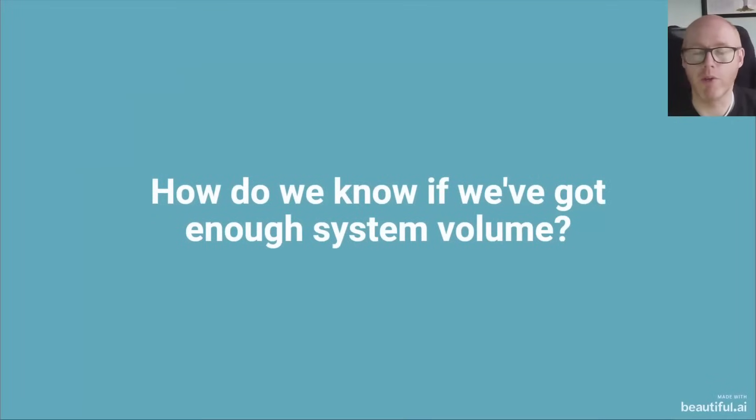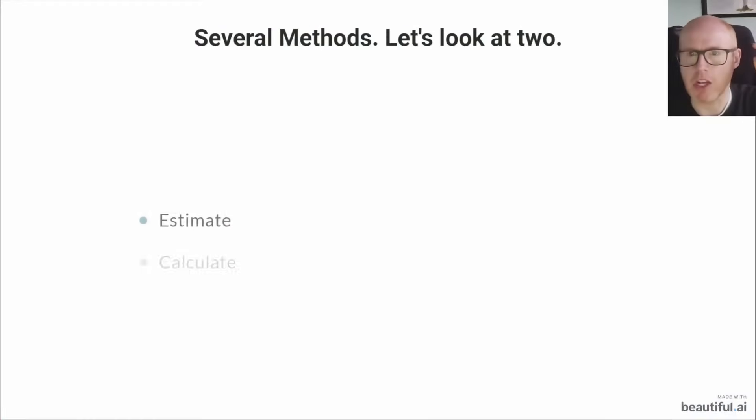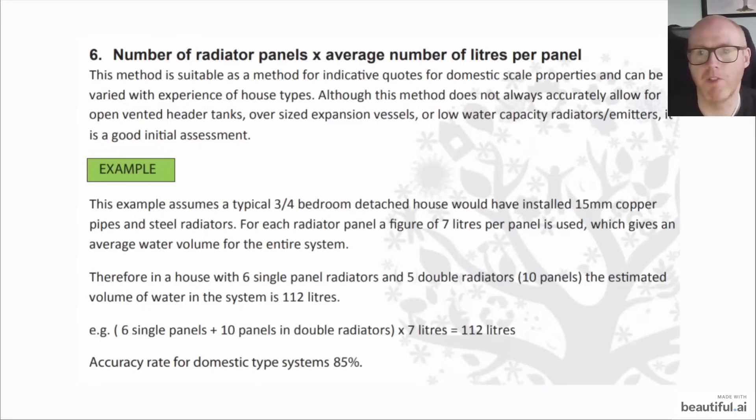How do we know if we've got enough system volume? There's a couple of methods but today I'm just going to look at two. There's one that's like a rule of thumb to estimate it, and then a very quick and easy way to calculate it. The best method is to drain your whole system, check your water meter, and then fill the system through the filling loop and check your water meter again. Then you can know exactly how big your system is very accurately.